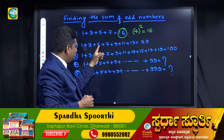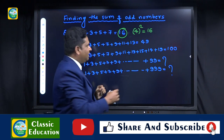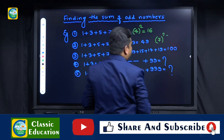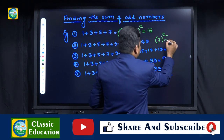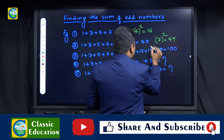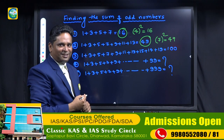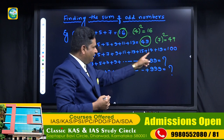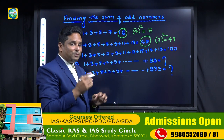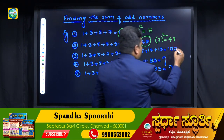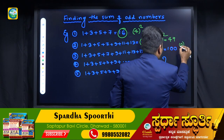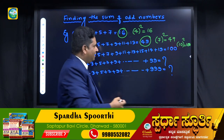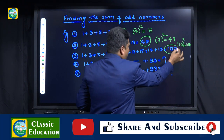In example 2, there are 7 numbers. Just square 7. Seven squared is 49 — that is your required answer. In example 3, there are 10 numbers. Square 10. Ten squared is 100 — that is your required answer. You have to see how many numbers there are and square that number.